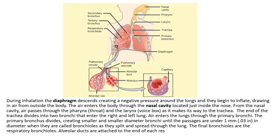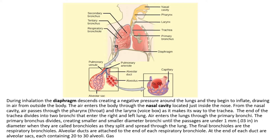The final bronchioles are the respiratory bronchioles. Alveolar ducts are attached to the end of each respiratory bronchiole. At the end of each duct are alveolar sacs, each containing 20 to 30 alveoli. Gas exchange occurs only in the alveoli.